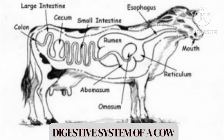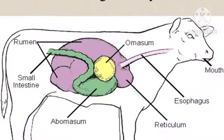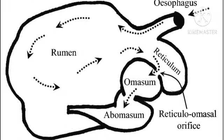Inside the digestive system of the cow, we have enzymes such as acetic acid, propanoic acid and butyric acid, which allow the cow to break down carbohydrates to form fatty acids that can be utilized by the cow. It also allows the cow to break down proteins to form amino acids which can be utilized by the cow. That's all about the digestive system of the cow. See you in the next video as we continue to talk about farming.